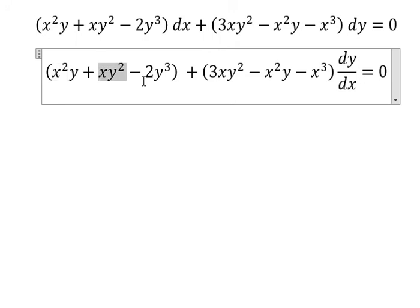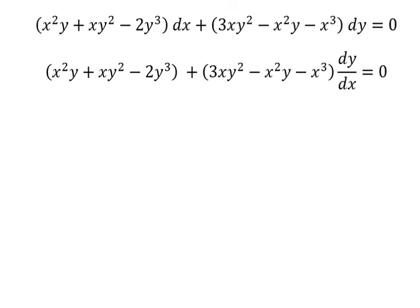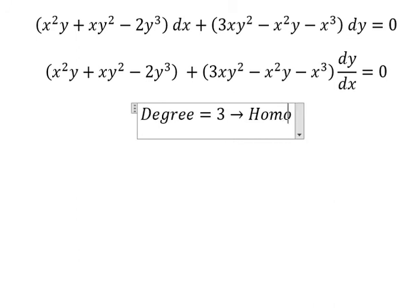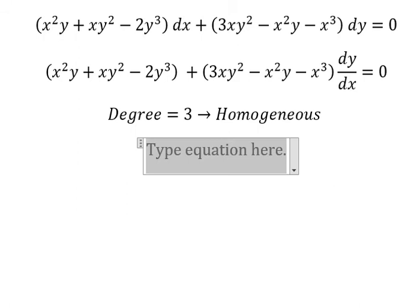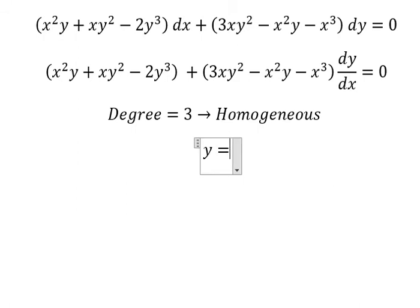So we have this one, this one, this one, and so on. In here they are degree number three, so this is about homogeneous.